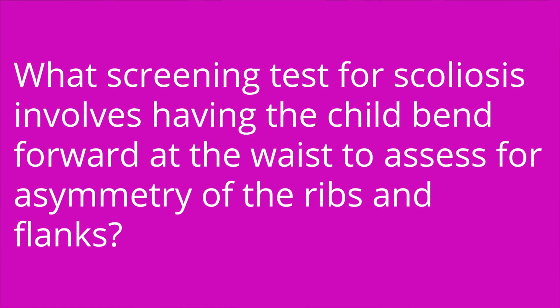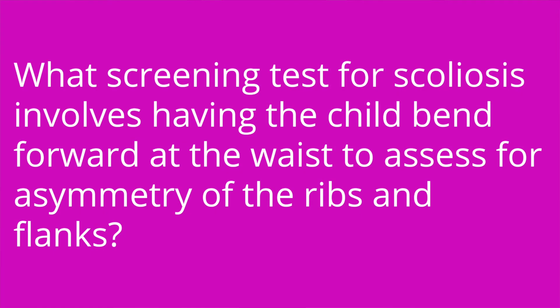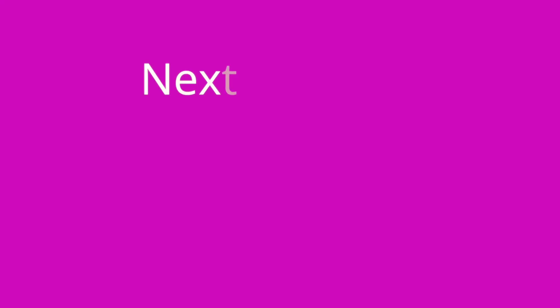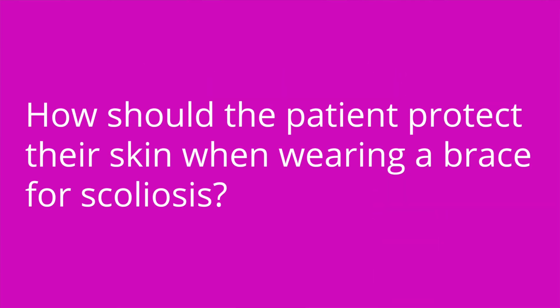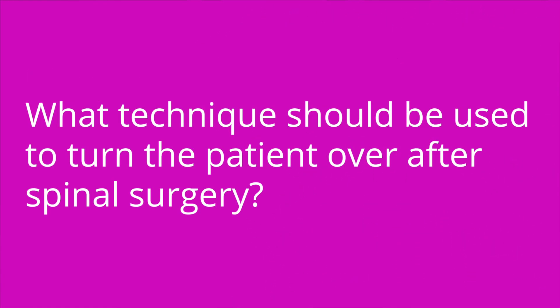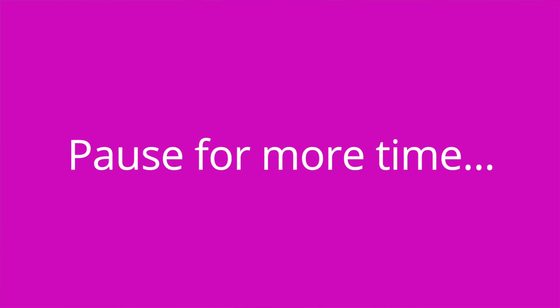It's quiz time, and I've got three questions for you. Question number one: what screening test for scoliosis involves having the child bend forward at the waist to assess for asymmetry of the ribs and flanks? The answer is an Adams-Ford bend test. Question number two: how should the patient protect their skin when wearing a brace for scoliosis? The answer is they should wear a thin t-shirt or tank top underneath the brace. Question number three: what technique should be used to turn the patient over after a spinal surgery? The answer is a log roll technique.